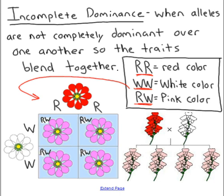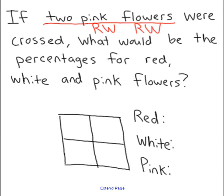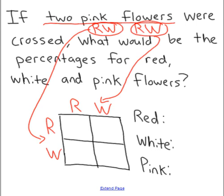I'd like you to try this practice problem: if two pink flowers were crossed, what would be the percentage for red, white, and pink flowers? Please pause the video now, and when you're done, check back in to see if we have the same answers. When I work through these problems as a teacher, I always write down the genotype first. Two pink flowers are represented by RW, which we bring down to our Punnett square and work through just like we always do.